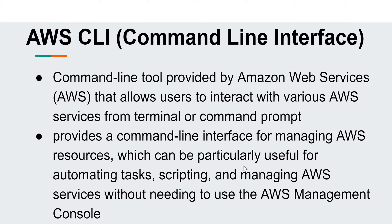AWS CLI can be particularly useful for automating tasks, scripting, and managing AWS services without needing to use the Management Console. Using the Management Console is fine for basic manual tasks, but if you are building full-fledged applications in AWS you will need to automate a lot of things. AWS CLI is very useful for automating stuff like creating resources or scheduling tasks.